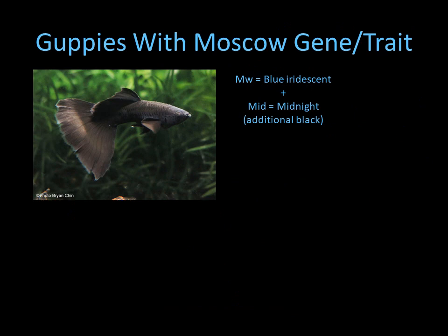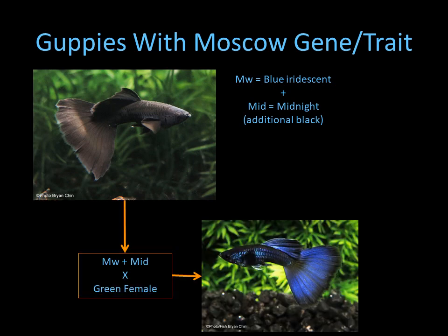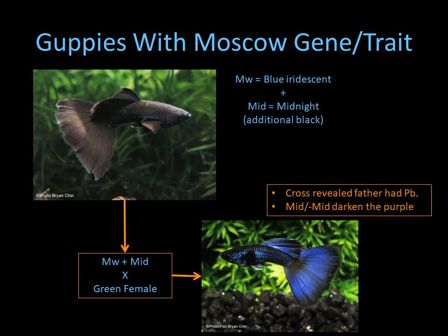Many of the black Moscows that you see — where they call them full blacks — generally have the Moscow trait and midnight. For example, I did a cross to a green female and got this result, which tells you the male must have had some PB in it since it turned purple. Also, it only has one gene for midnight, which gives you a hint that to get that black dark color it needs to be homozygous for the midnight gene.